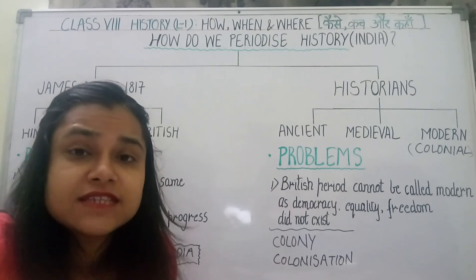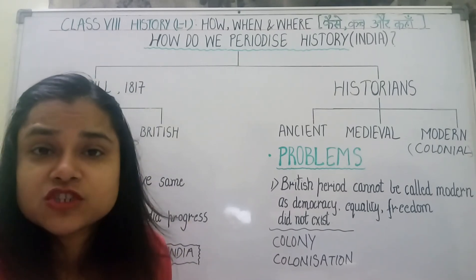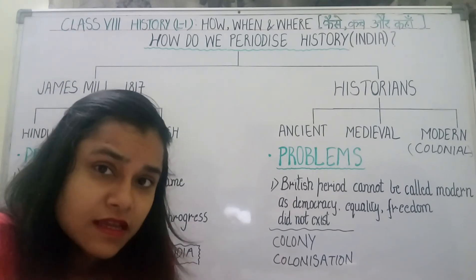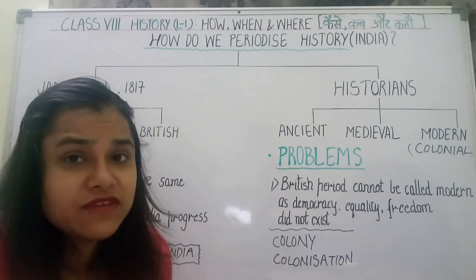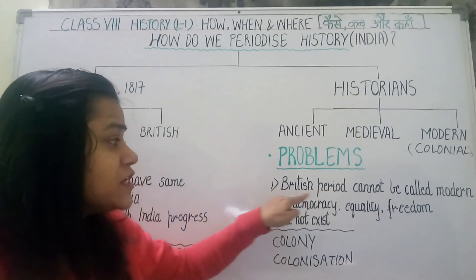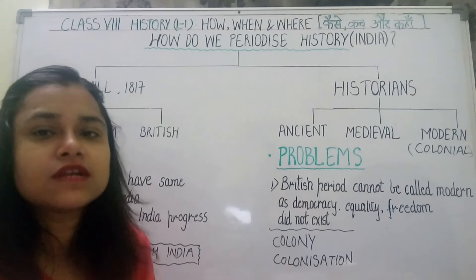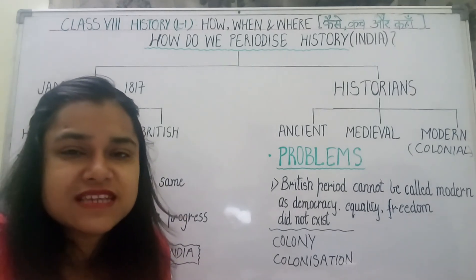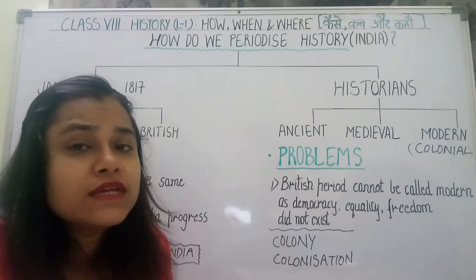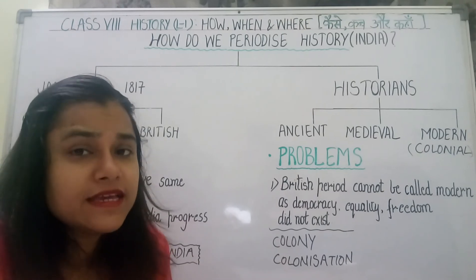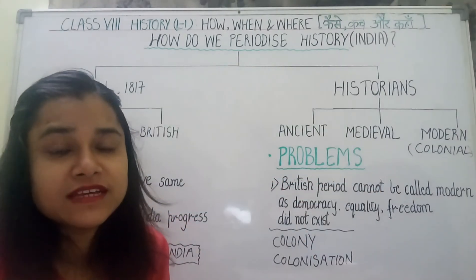Jabki western theories mein modernization tab hoti hai jab na sirf infrastructure mein development ho, but equality, freedom, democracy — ye ideas bhi develop hoon. But British period cannot be called modern as democracy, equality, freedom did not exist. British time period mein ye saari cheezein — equality, freedom — ye sab toh logon ke paas thi nahin, aur democracy bhi nahi thi. Toh is liye kai log, kai historians, 'modern' ki jagah 'colonial' kehna prefer karte hain hamare tisre wale period ko.